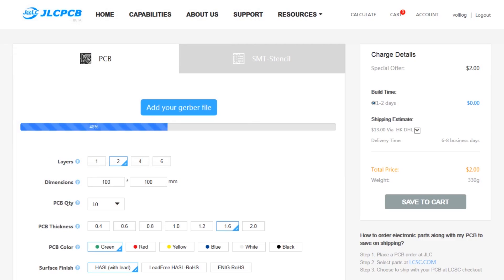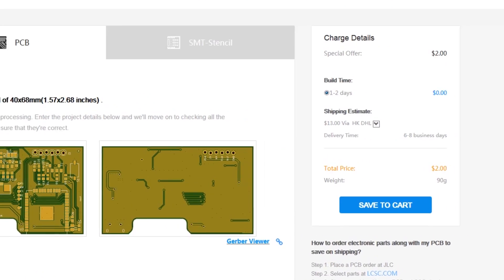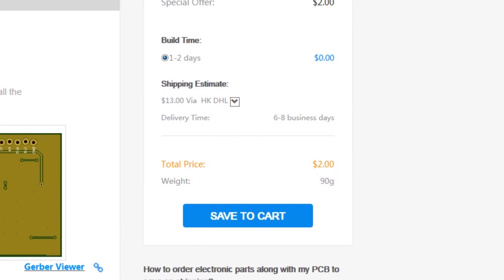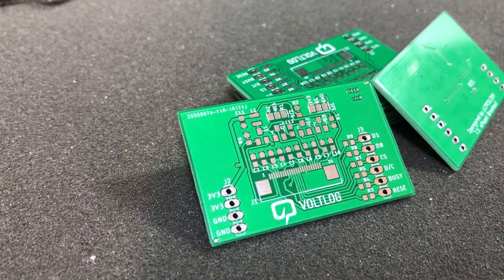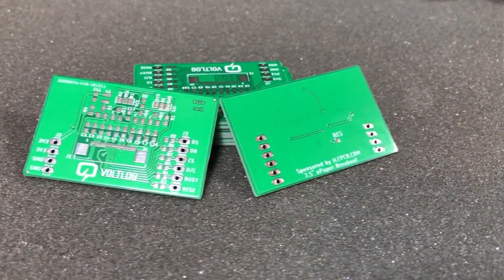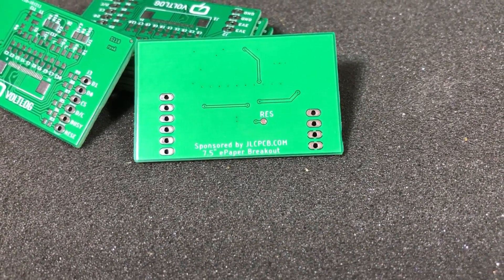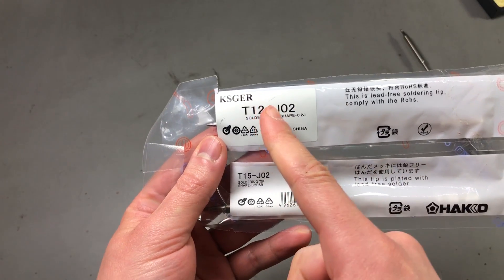This video is sponsored by JLCPCB.com who in the past months upgraded their manufacturing line so they are now offering 24 hours turnaround time for prototype PCBs for the same price of just $2. Prototyping is now faster and cheaper than any other place so it's definitely worth checking them out.